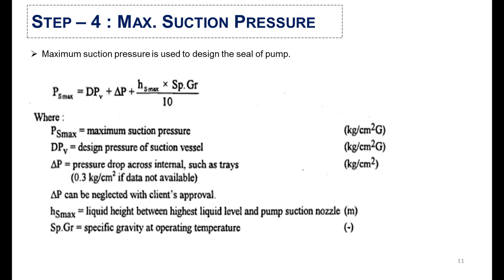In the fourth step, you will calculate the maximum suction pressure, which is used to design the pump seal. The formula states that DP is the design pressure of the suction vessel, while delta P is the pressure drop across internals such as trays — mostly used where there is a stripper or absorber — to accommodate the pressure drop across packing or trays. If data is not available, we will use 0.3 kg, and it can also be neglected with the consent of the vendor. After applying all these values, we will get the maximum suction pressure.